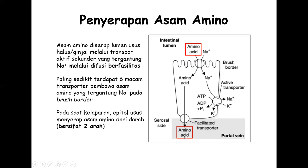Asam amino tunggal yang mau masuk ke vena porta akan berdifusi secara pasif—tidak perlu ion natrium lagi. Natrium diperlukan hanya dari lumen usus halus menuju sel epitel, bukan dari sel epitel ke vena porta. Sebagai penyeimbang, kalau ada natrium yang dikeluarkan maka kalium harus dimasukkan, agar tidak terjadi perbedaan potensial membran yang signifikan yang bisa mengganggu keutuhan membran sel.